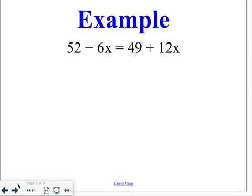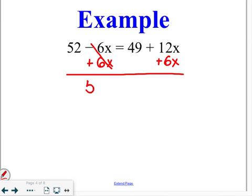The first tip that I gave was to deal with the variables first. So, our goal is to move either the negative 6x to the right side or the positive 12x to the left side. You're going to do that the same way that you would deal with numbers by using inverse operations. We want to try and keep the variables positive, so we're going to add 6x's to both sides. That eliminates them from the left side of the equation, leaving me with just 52 is equal to 49 plus 18x's.